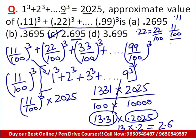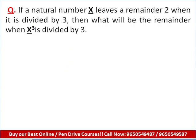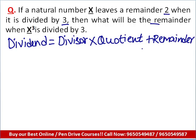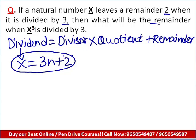Now let's take up a question on divisibility. If a natural number x leaves the remainder 2 when divided by 3, what will be the remainder when x cubed is divided by 3? Recall the basic concept: dividend = divisor × quotient + remainder. Here the dividend is x and the divisor is 3. If the quotient is n, then x = 3n + 2 because the remainder is 2. So x is of the form 3n + 2.